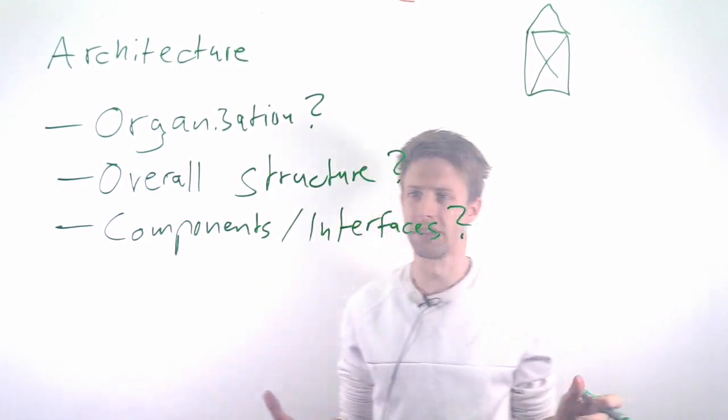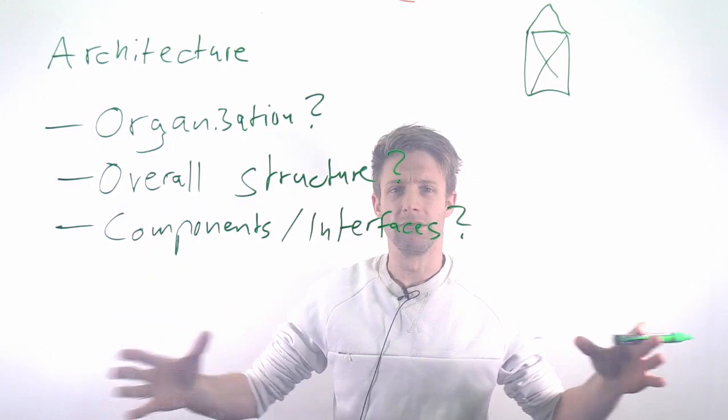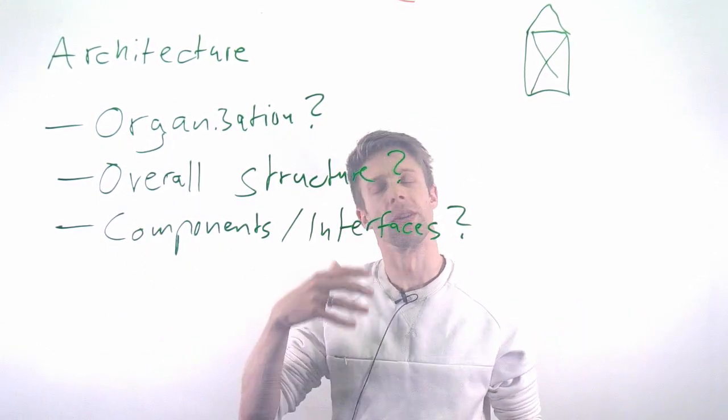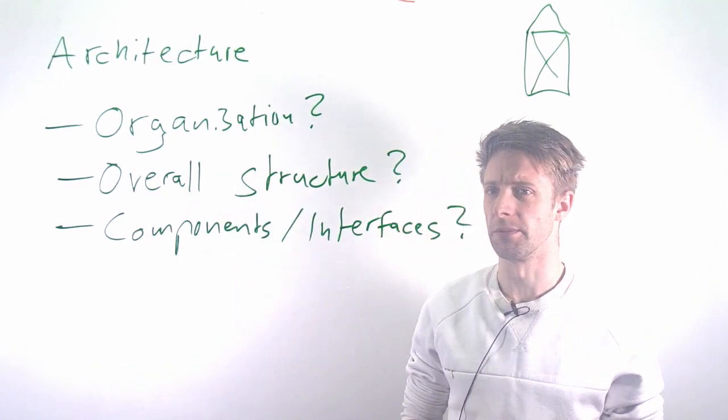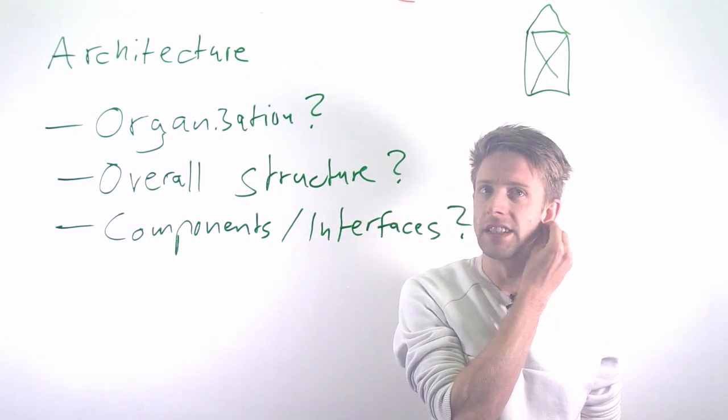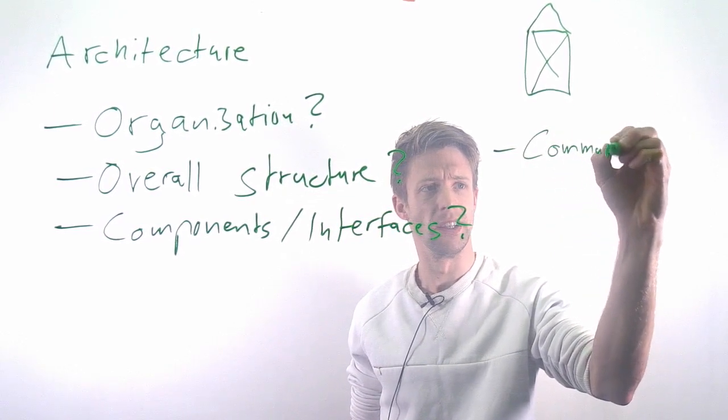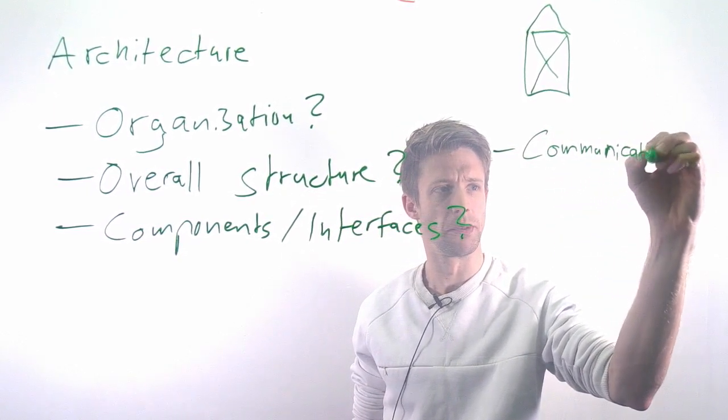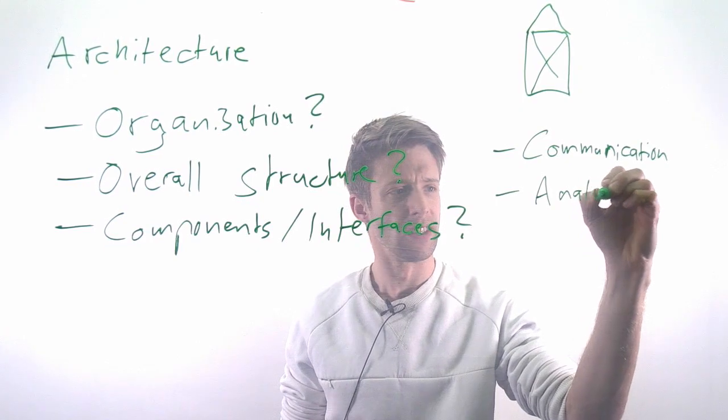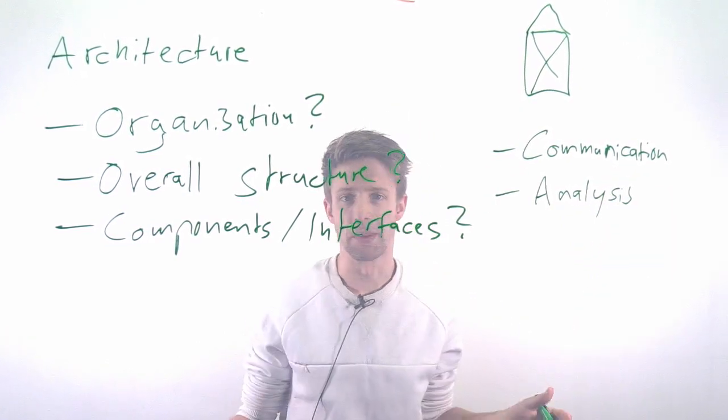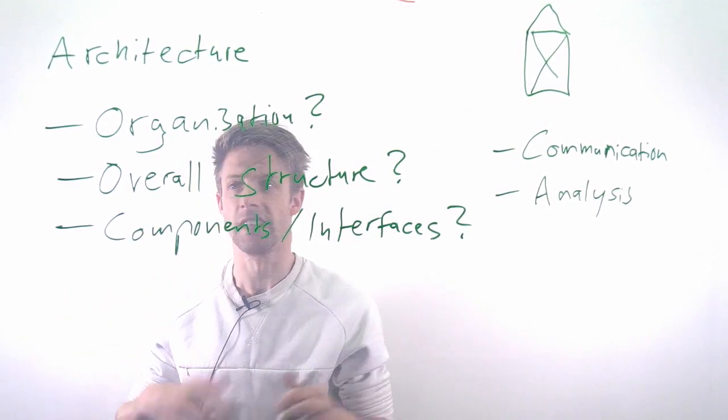These are typical things we ask ourselves, and it's basically to divide work, to organize work later on, but also to plan certain properties that we need for our system. The reason to have an architecture is that you can use it for communication—to describe to people what you're doing and how you're structuring the system. You can use it to analyze certain properties, like how we're going to have good performance or how we're going to focus on security, for example.